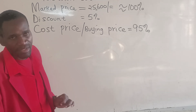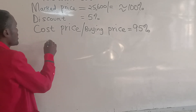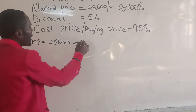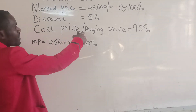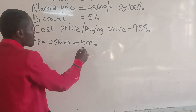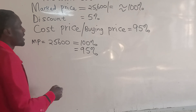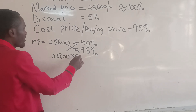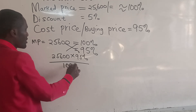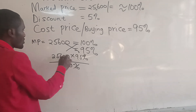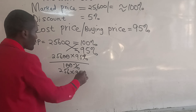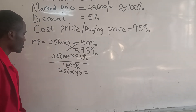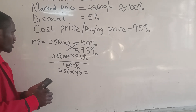The question asks us to calculate the cash price of the machine. So: 25,600 Kenyan shillings is equivalent to 100%. The cost price, or buying price, or cash price, is 95% — that is 100% less the 5% discount. By cross multiplication, the cash price equals 25,600 multiplied by 95 divided by 100, which gives us 25,600 × 95, so the customer pays 24,320 Kenyan shillings for the television set.